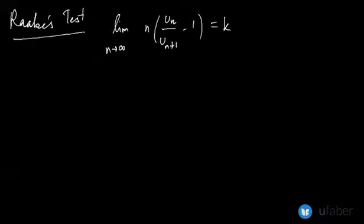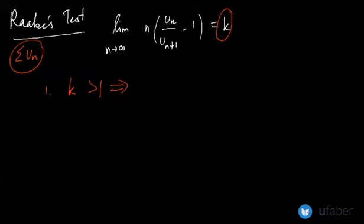Now the convergence or divergence of the given positive series Σu_n depends upon the value that k takes. The thumb rule is that if your value for k is greater than 1, then the given series will be convergent.